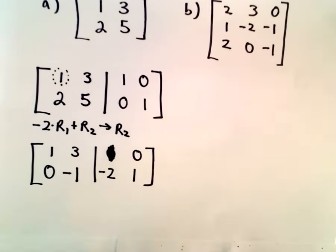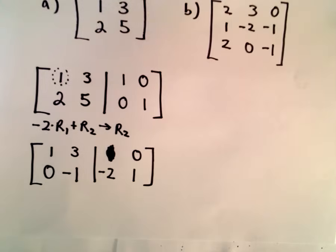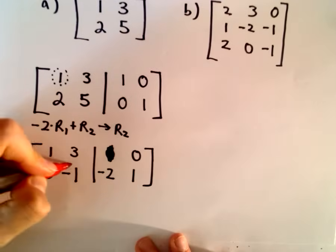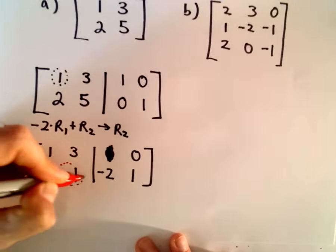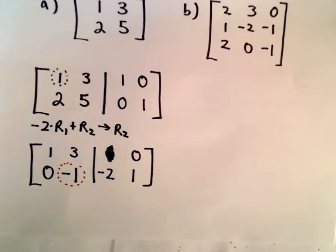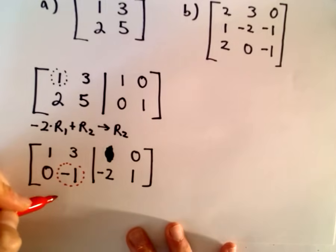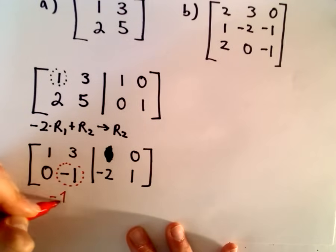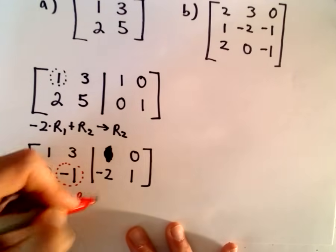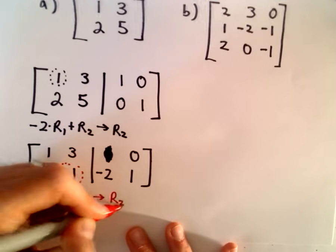So, that one, not too bad at all. So, now, again, we just want to get this entry with a negative 1. We want that to be a positive 1. So, all I'm going to do in that case is I'm just going to take negative 1 and multiply that by row 2 to get my new row 2.